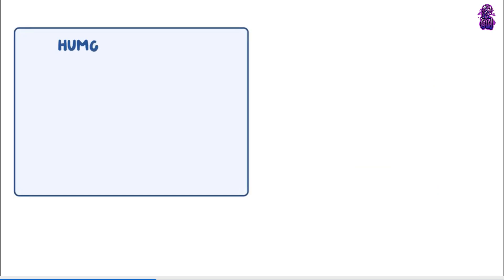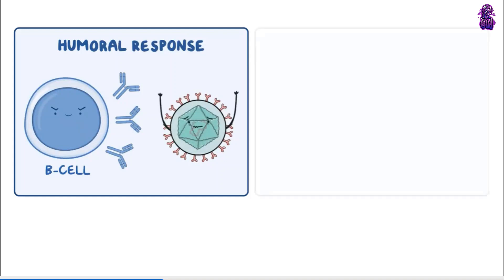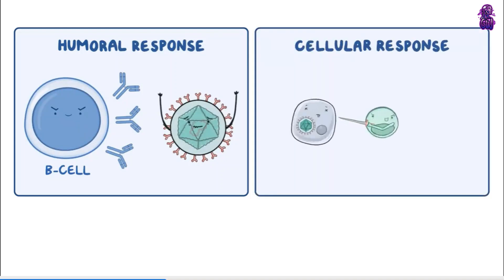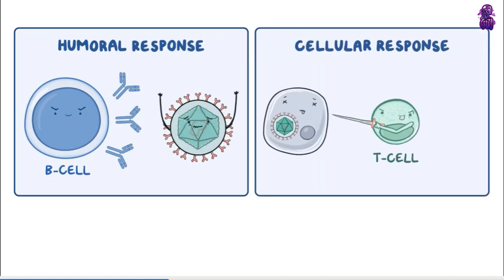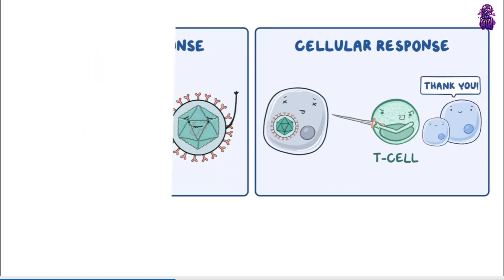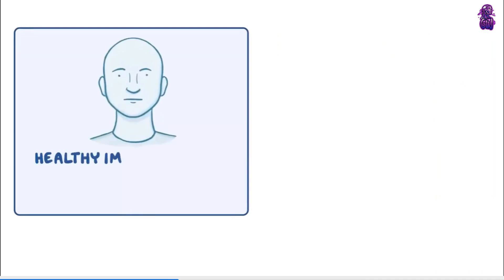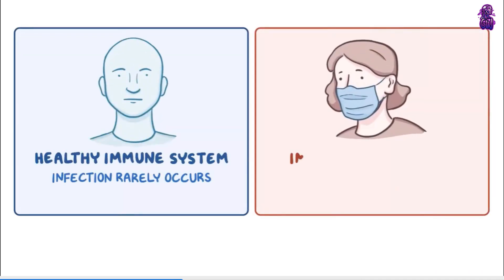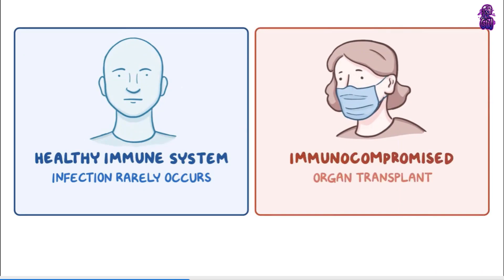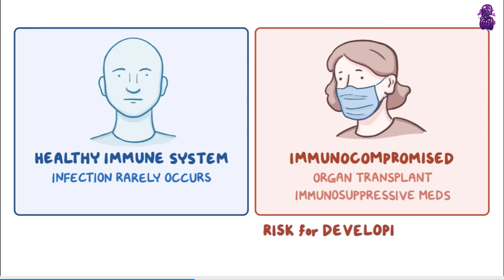The body's immune system reacts to the infection by mounting a humoral response, where B cells create antibodies to fight off the virus, and a cellular response, in which cytotoxic T cells work to kill the infected cells, limiting their ability to spread to other tissues. In people with a healthy immune system, infection rarely occurs. However, people who are immunocompromised, such as people with AIDS, people who have undergone an organ transplant, or people who take immunosuppressive medications, are at risk for developing the disease.